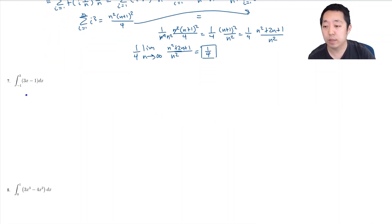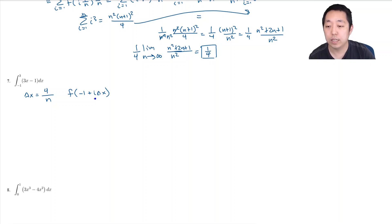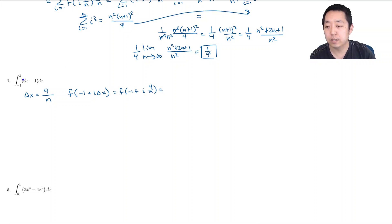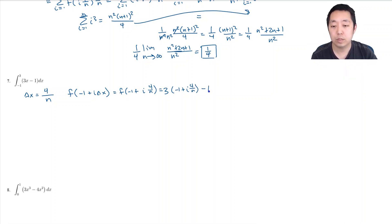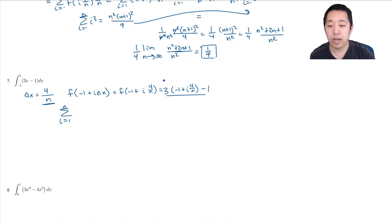For problem 7, the width of each rectangle is Δx = 4/n (interval width 4 divided by n). The height of each rectangle starts at −1 plus i times Δx, so the height is f(−1 + i·(4/n)) = 3·(−1 + i·(4/n)) − 1. The full sum is Σ(i=1 to n) of [3·(−1 + 4i/n) − 1] · (4/n).